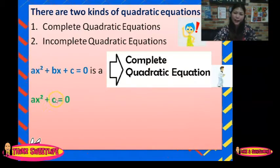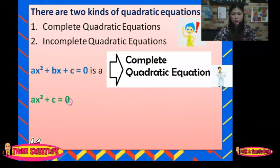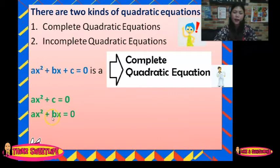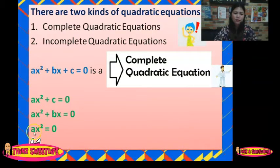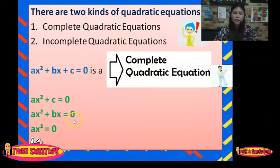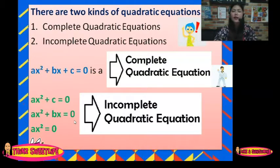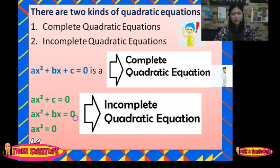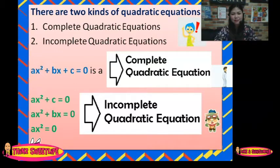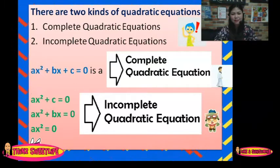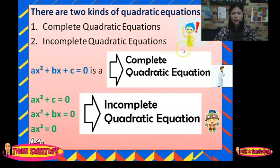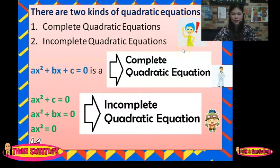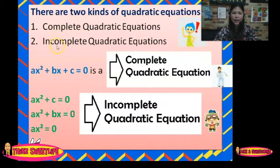Ax squared plus C equals 0, Ax squared plus Bx equals 0, and Ax squared equals 0 are called incomplete quadratic equations. Remember the two kinds of quadratic equations: complete and incomplete.